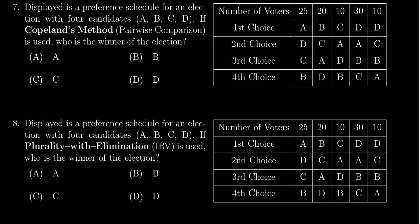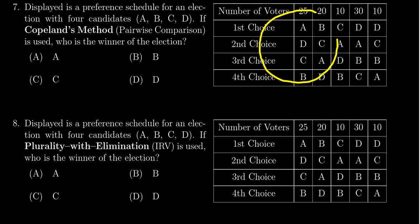In this video, we provide the solution to question number seven for practice exam three for Math 1030, in which case we are given an election preference schedule with four candidates, A, B, C, D. Now we're asked to determine who's the winner of the election using Copeland's method, that is, pairwise comparisons. So there are six comparisons we have to do between the four candidates there, so let's do them one by one.